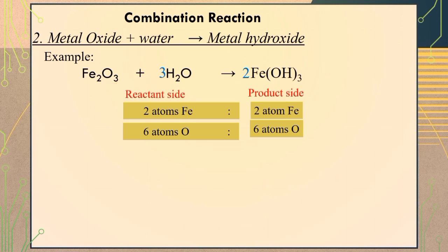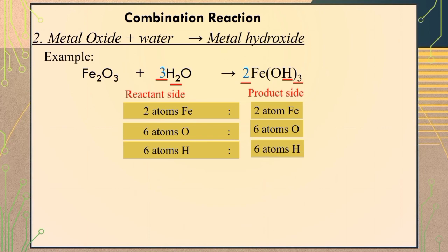Finally, inspect the hydrogen atoms. On the reactant side, three multiplied by two gives six atoms of hydrogen. On the product side, two multiplied by three equals six atoms of hydrogen as well, making the chemical equation balanced.